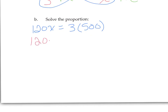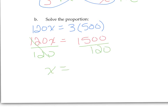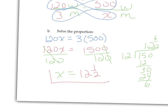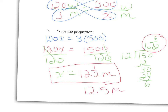Simplifying: 120X equals 1,500. We divide by 120 to isolate X. 150 divided by 12: 12 goes into 15 one time, 12 goes into 30 twice, with 6 left over — so 6 twelfths, giving 12 and 6 twelfths, which is 12 and one half minutes. You could also express this as a decimal: 12.5. It's perfectly fine to use decimals.